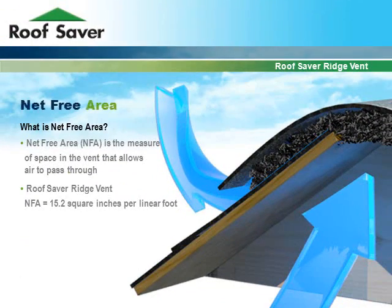What is net free area? Net free area is the measure of space in the vent that allows air to pass through. With the Roof Saver Ridge Vent, the net free area is equal to 15.2 square inches per linear foot.